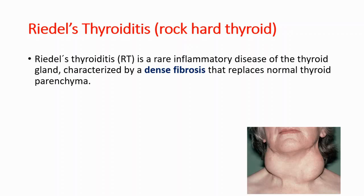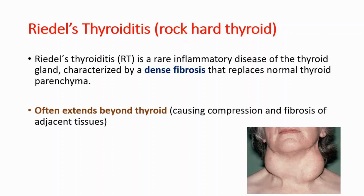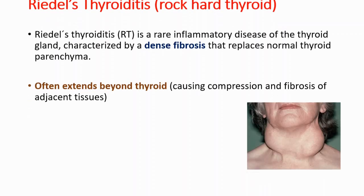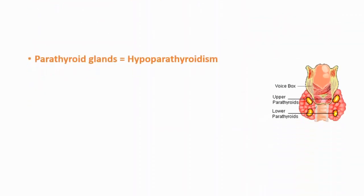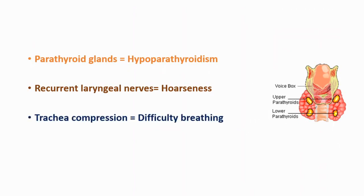It is characterized by a dense fibrosis that replaces normal thyroid parenchyma, and this disorder often extends beyond the thyroid, causing compression and fibrosis of adjacent tissues. If this compression and fibrosis happens on the parathyroid, you will see hypoparathyroidism. If it is affecting the recurrent laryngeal nerves, we will see hoarseness. If it is compressing the trachea, we can see difficulty breathing.